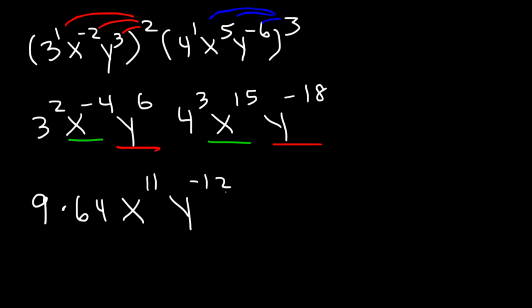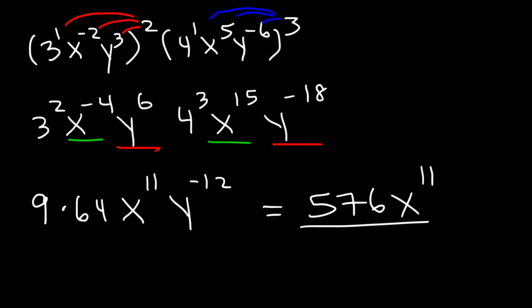So now let's multiply 9 times 64, which is 576. The only thing we need to change is the negative 12 — we move the y variable to the bottom so that it becomes positive 12. So the final answer is 576x to the 11th over y to the 12th.